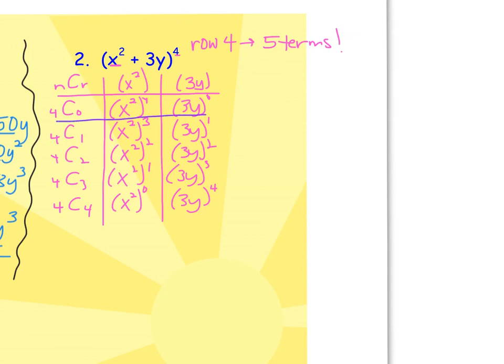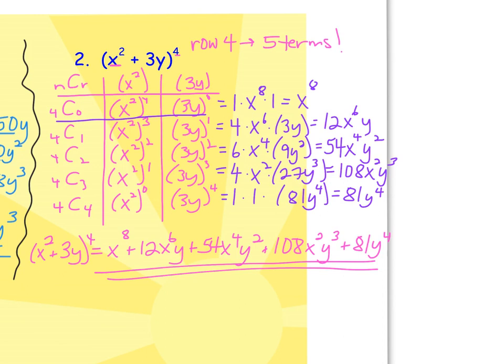Now your goal will be to multiply straight across. Again, I want you to try this. The more you can do independently, the easier the homework will be. Please try all 5 of these terms. Once you get them, press play, and we'll see if we have a match. If not, take time to look at where we had different values. Are you ready? Let's take a look.